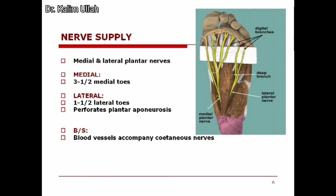The nerves supplying the muscles on the sole of the foot are derived from the tibial nerve, specifically the medial and lateral plantar nerves. The medial plantar nerve supplies the three-and-a-half medial toes and the lateral plantar nerve supplies the one-and-a-half lateral toes. These nerves perforate through the plantar aponeurosis to reach their destinations.